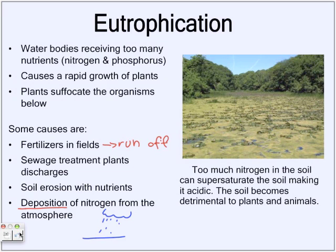Too much nitrogen in the soil — not just water, but in the soil too. When you have too much, you supersaturate the soil, and that causes a reverse effect. Before, you were trying to fertilize the soil so it becomes more fertile, meaning it grows plants quickly and there's an abundance — but now it's becoming acidic because there's way too much nitrogen, and it's burning away the plants and animals. Everything is just being killed by this nitrogen overload. And that is the end of our presentation.